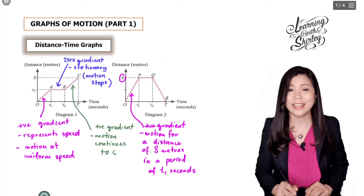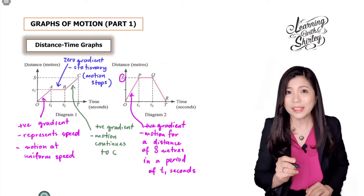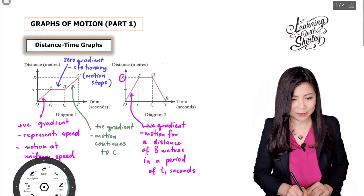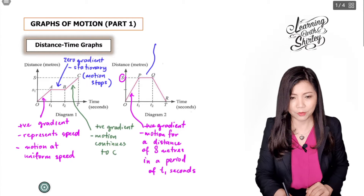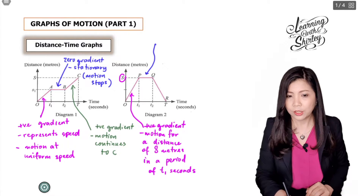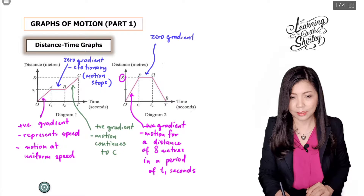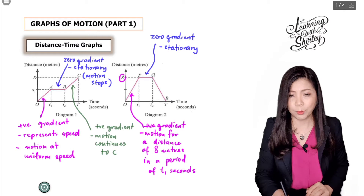For line PQ, it is a horizontal line, which means it's a zero gradient — the object is stationary and the motion stops.